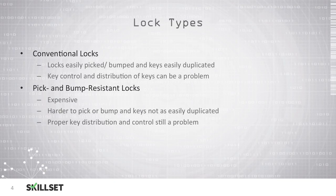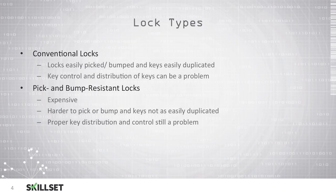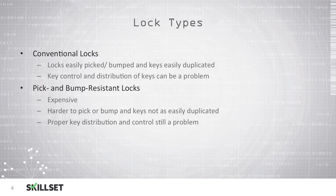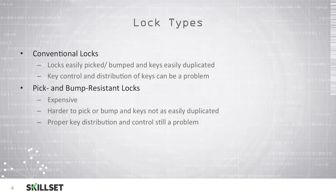When we look at door locks, we have a few options that we can select for our organization. Conventional locks can be easily picked or bumped and keys can be easily duplicated. It's difficult to maintain key control because employees could make unauthorized copies of the keys, and you also have to find a way to distribute the keys efficiently. We also have pick and bump resistant locks that are more expensive, but they're harder to pick, they are resistant to bump key attacks, and the keys are harder to duplicate. But we still need to figure out a way to distribute the keys to our authorized employees and have a system in place to make sure the keys are returned when the employee is no longer with the organization.